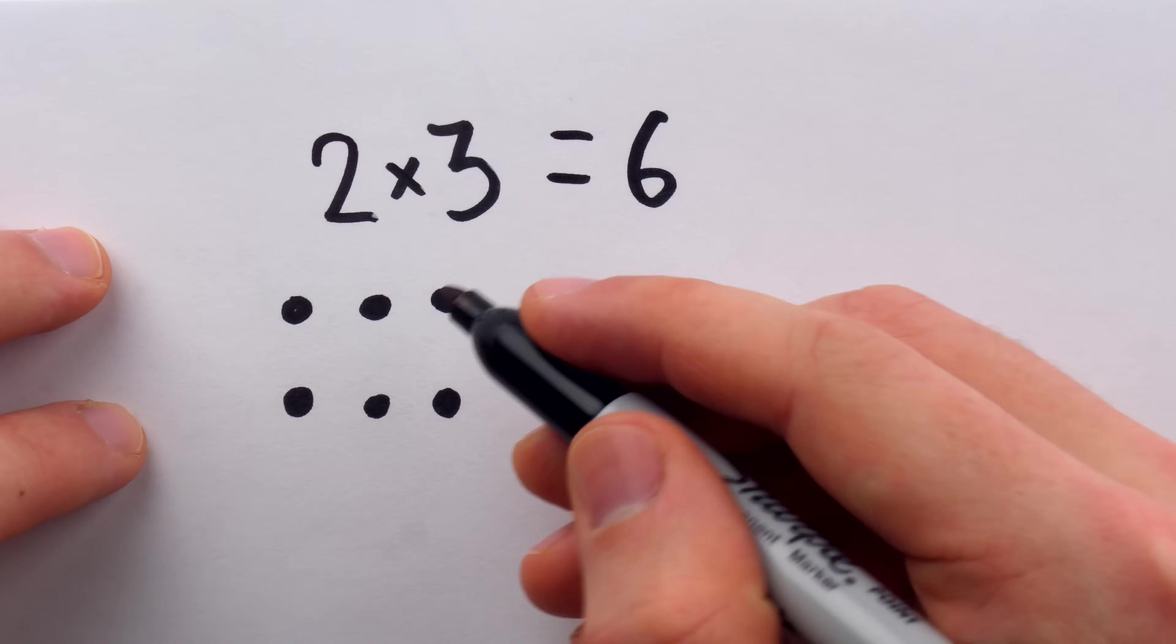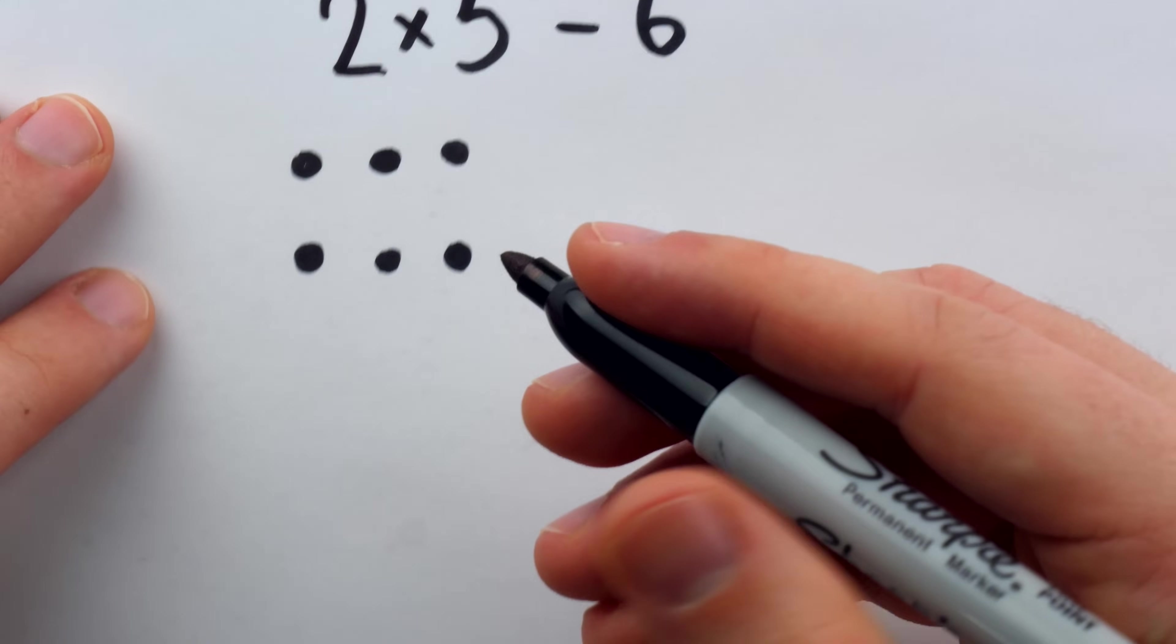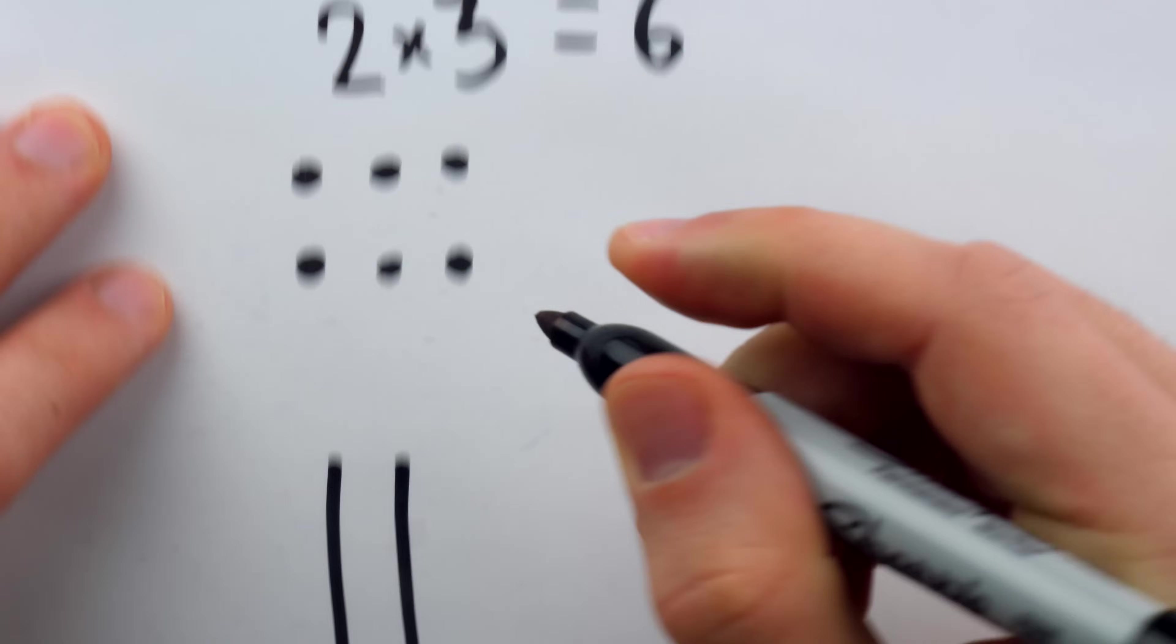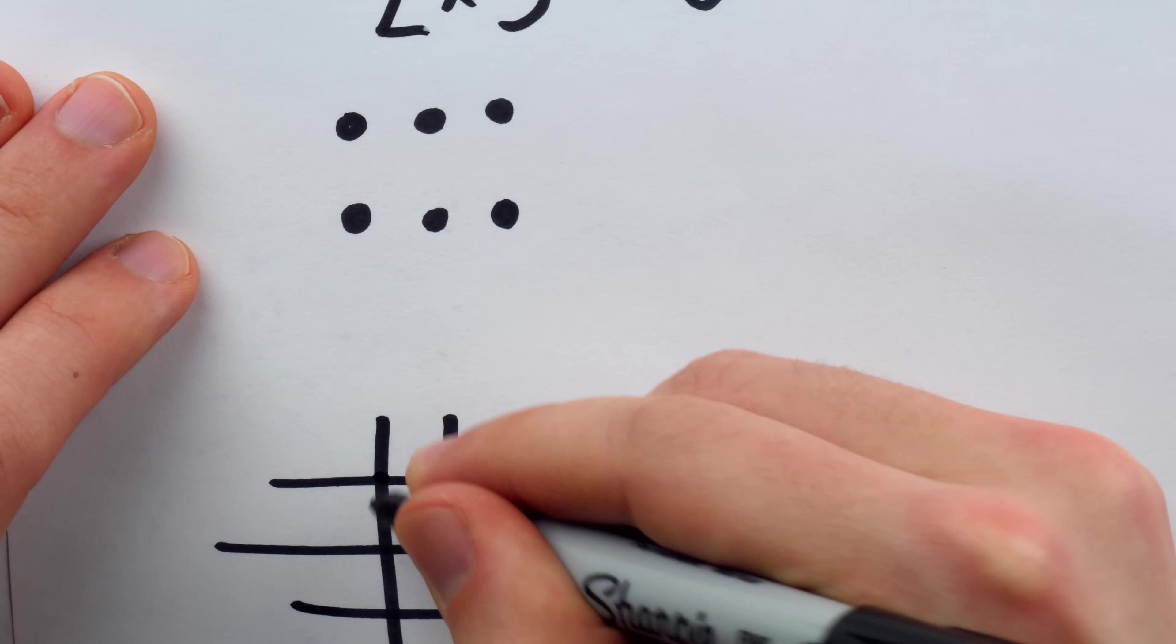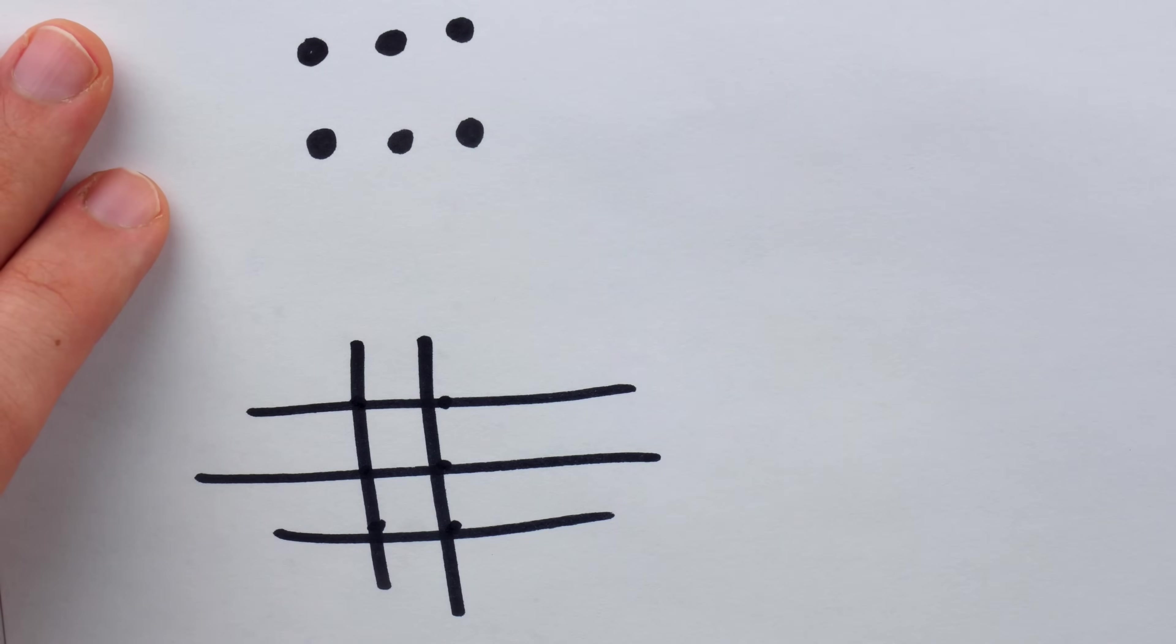But if I'm in a hurry, and I don't want to write six dots, I could get away with just writing five lines, the two vertical lines, and then the three horizontal ones. And then you see those intersections. There are six of them.